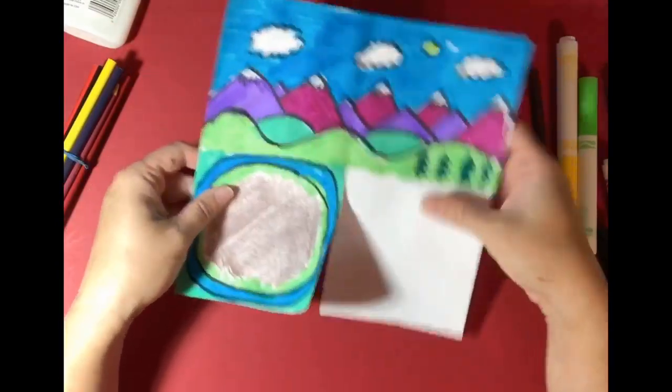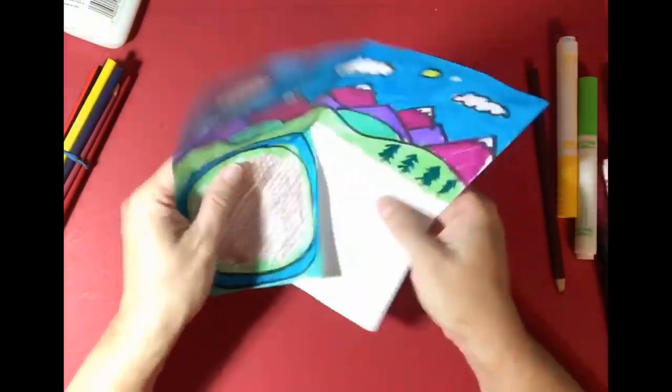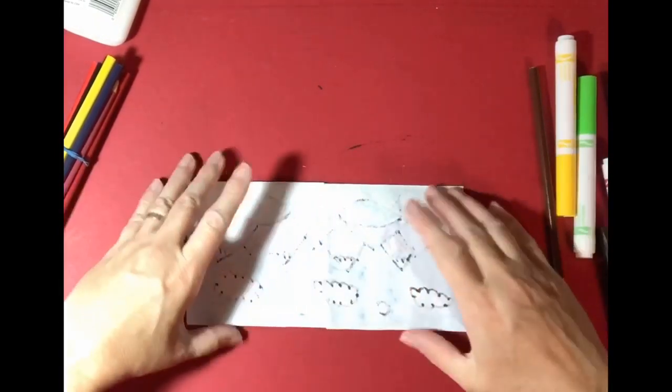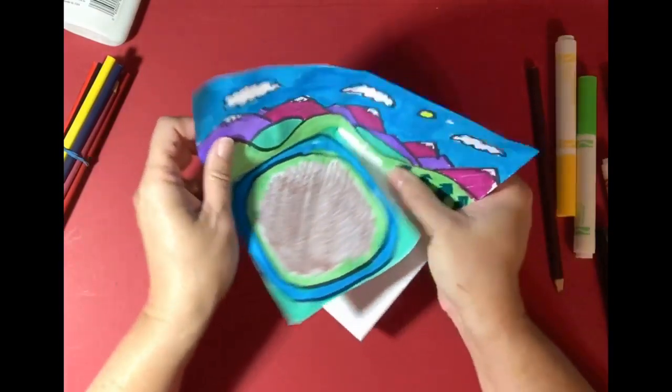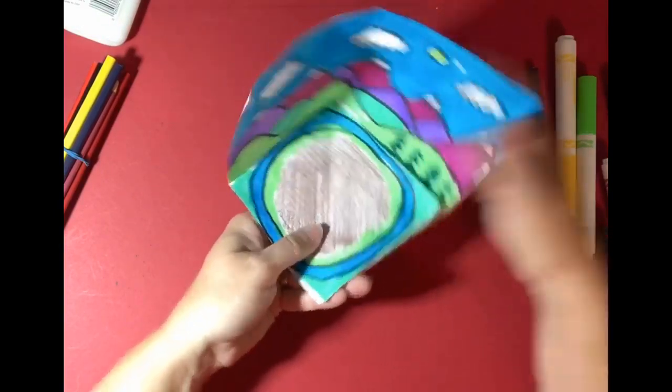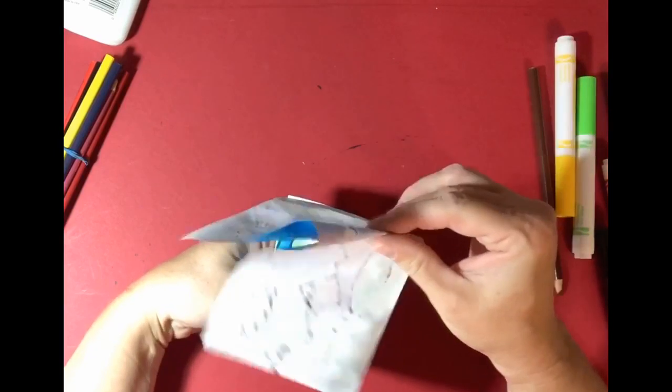Alright, now that I'm done with that, I can fold it over. You might want to crease this down first. There, that'll make a more crisp environment here as this overlaps. And I'm going to also crease it down here.